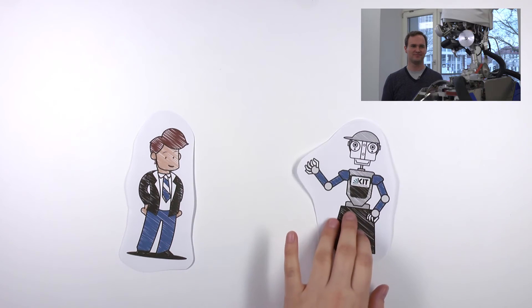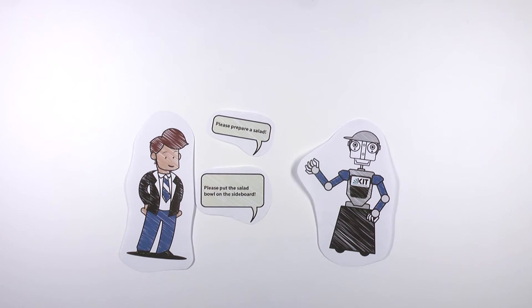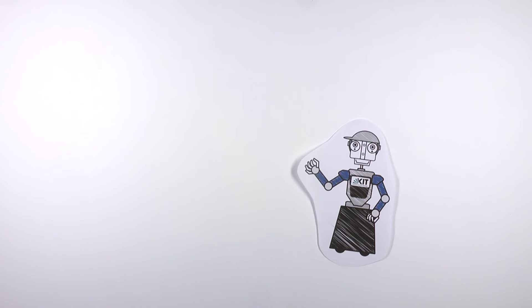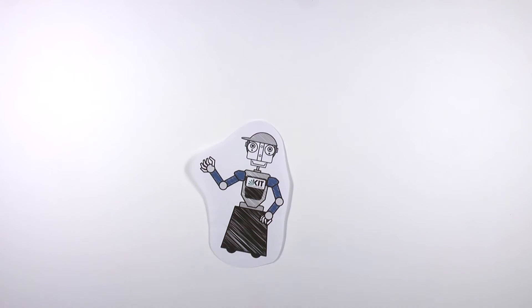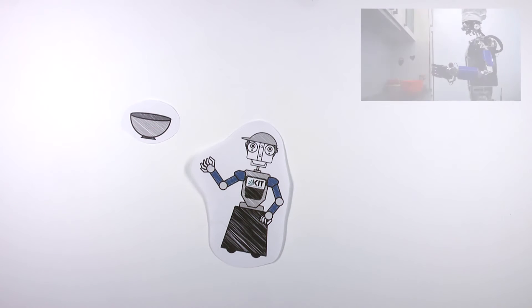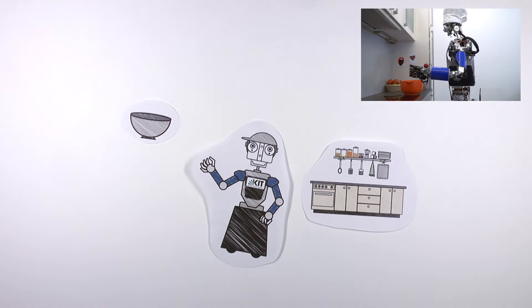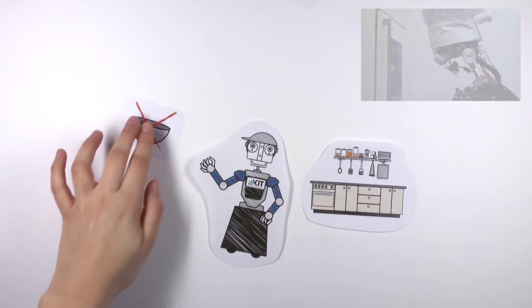Mirko asks Ama to prepare a salad. For this, Ama first needs a salad bowl. Ama has already learned what a bowl looks like. It goes to the countertop and looks for a bowl. It does not see a standard salad bowl.